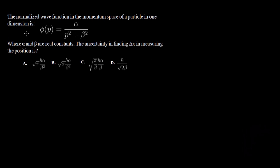The next question: the normalized wave function in momentum space of a particle in one dimension is φ(p) = α/(p² + β²), where α and β are real constants. We have to find the uncertainty ΔX. You can see that the options A, B, C, and D have α, β, and ℏ with different powers, so I'll use the same dimensional analysis method as before.